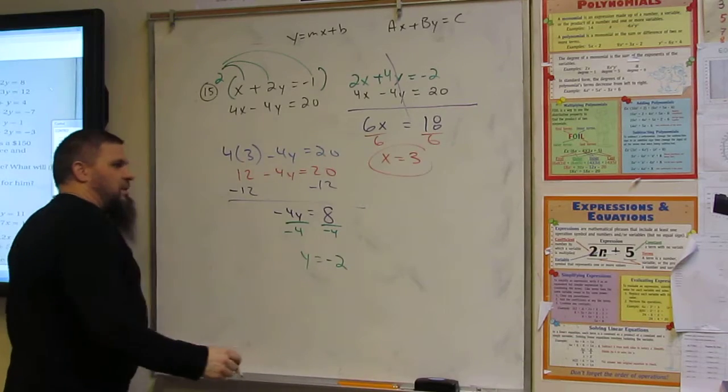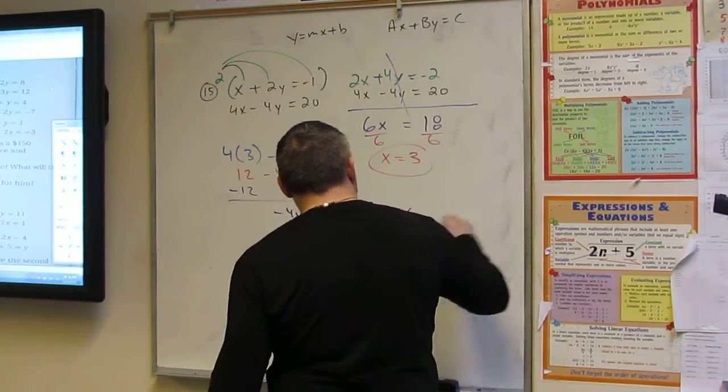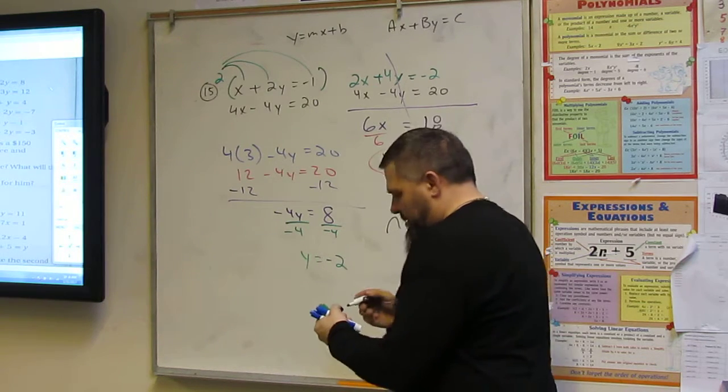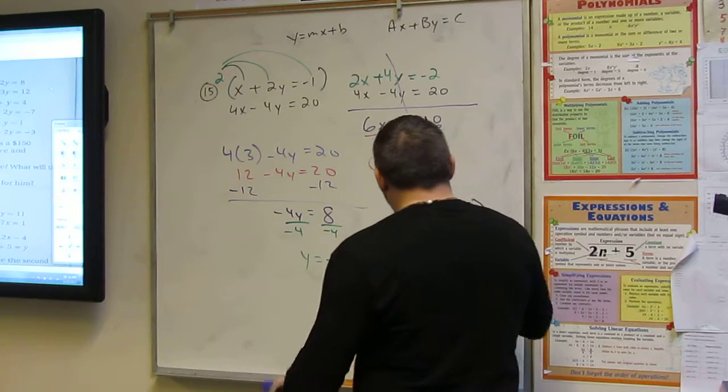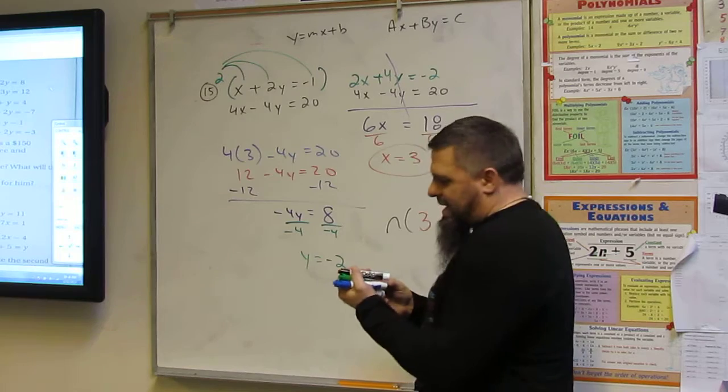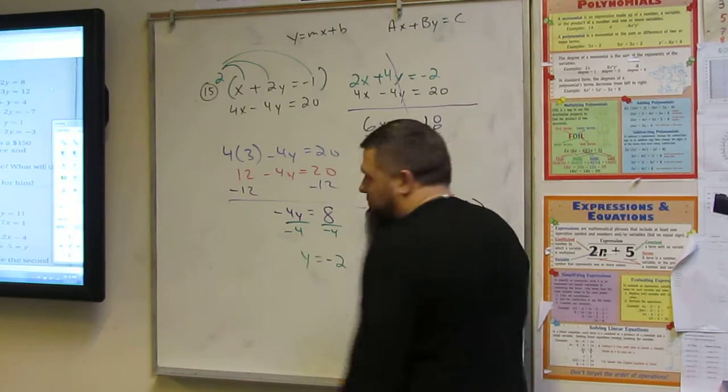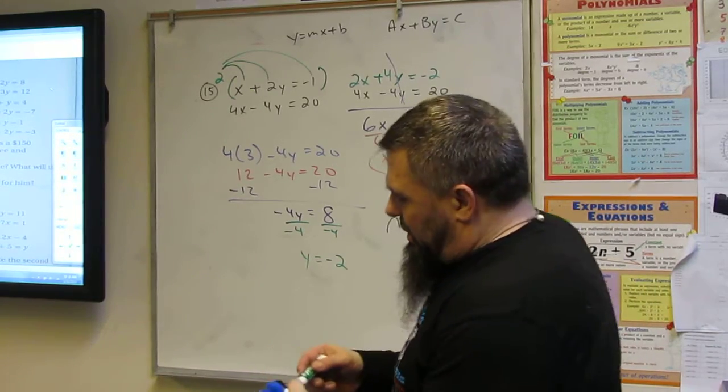So what is our intercept? Three is X. And Y is negative two. That's it.